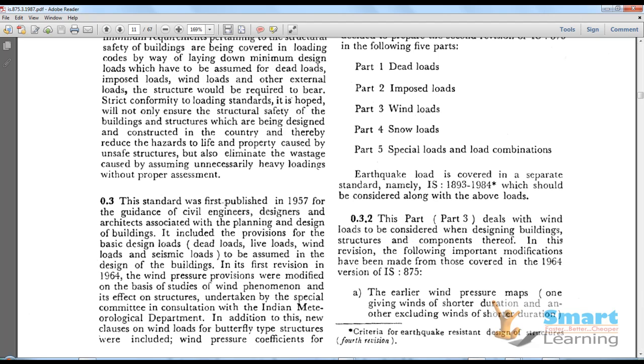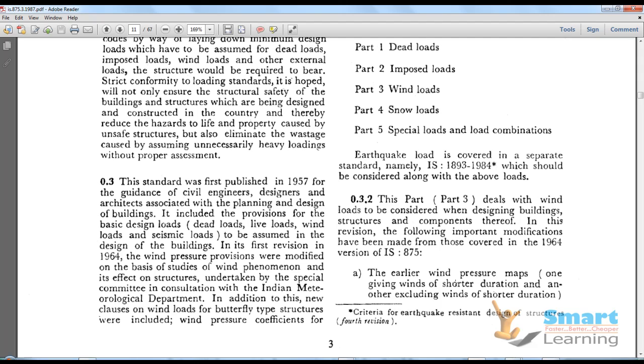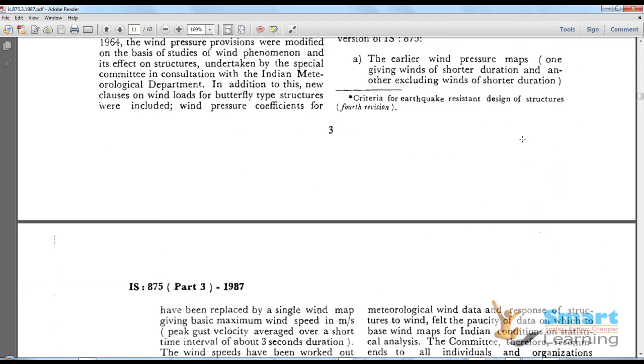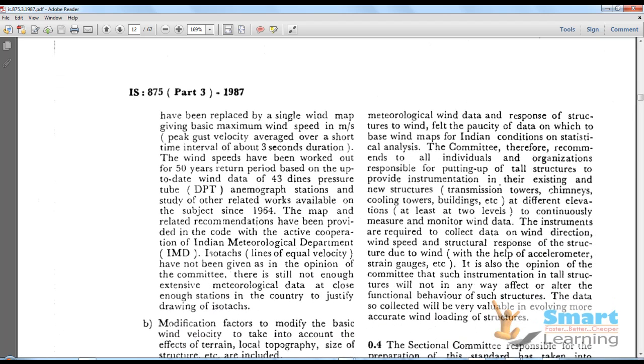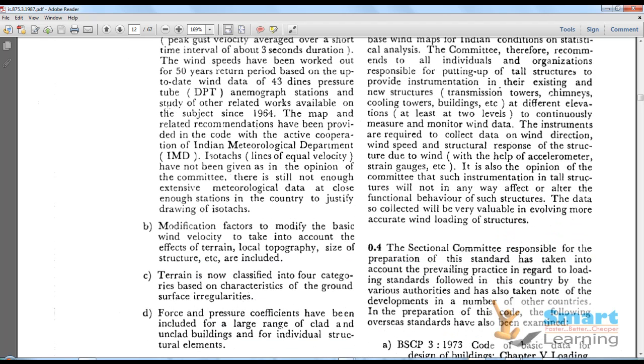Let me go through this IS 875 Part 3 code where a couple of amendments happened. The earlier wind pressure maps giving winds of shorter duration and excluding winds of shorter duration have been replaced by a single wind map giving maximum wind speed in meters per second. We are interested in the worst case scenario, so maximum wind speed will be most useful with a time interval of about 3 second duration. The wind speeds have been worked out for 50 years return period based on up to date wind data from 43 Dines pressure tube and anemograph stations.